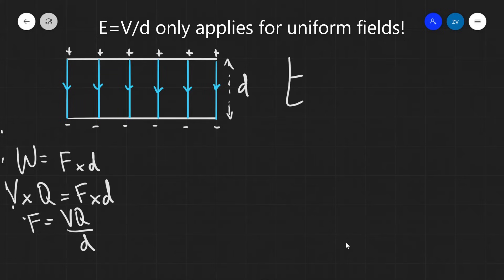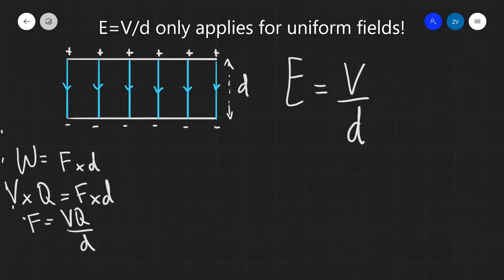This formula E = V/d only applies to the electric field between two parallel plates, or in situations where we can generally assume that the field is uniform.